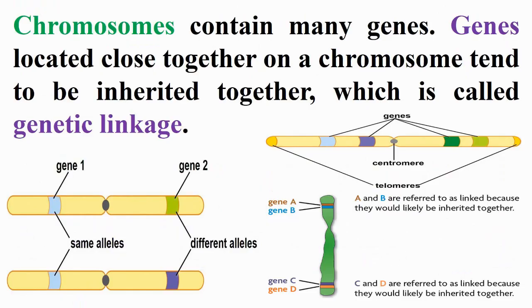Genes located close together on a chromosome tend to be inherited together, which is called genetic linkage, as mentioned in the figures inside the slide.